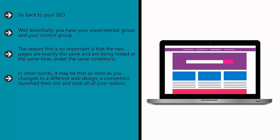If you change the page only for a short time and then changed it back, you wouldn't be able to account for confounding variables such as naturally peaking and waning interest, or global events that might impact internet usage habits. In other words, it may be that as soon as you change to a different web design, a competitor launched their site and took all of your visitors. The drop in traffic had nothing to do with your new web design, but you might not know this — as such, the experiment is void and you end up acting on false data.